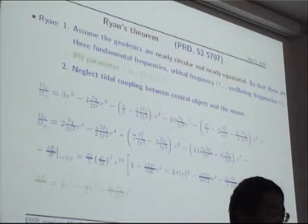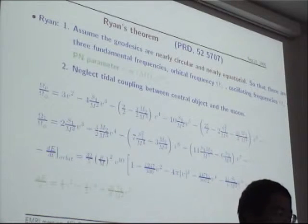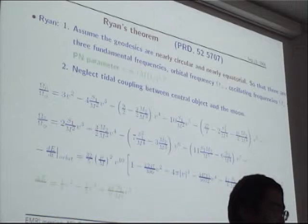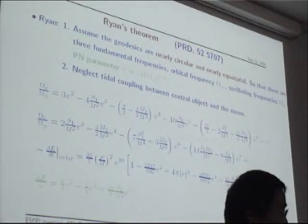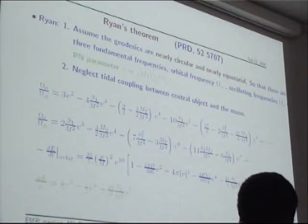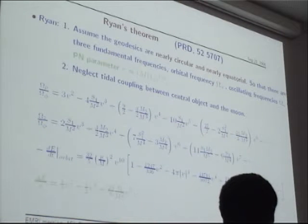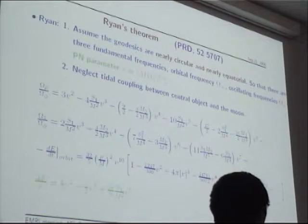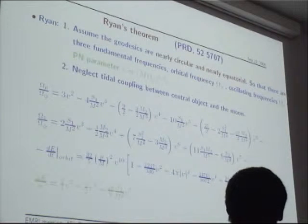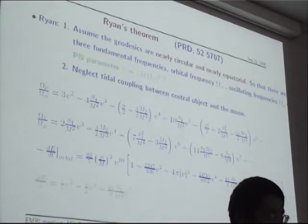As is well known, Fintan Ryan proved a theorem in 1995 that we can map the spacetime with LISA. Besides the two assumptions I made, he added two more. First, he assumed the geodesics are nearly equatorial and nearly circular. So there are three fundamental frequencies: the orbital frequency omega-phi related to the circular and equatorial motion, and because the motion is nearly circular and nearly equatorial, there are two oscillating frequencies — the radial oscillating frequency and the vertical oscillating frequency. He neglected the tidal coupling between the central body and the moon.